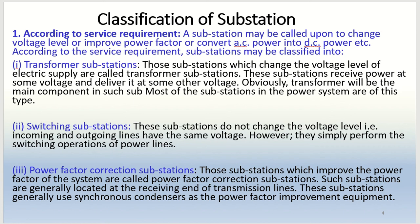Next is the power factor correction substation. Those substations which improve the power factor of the system are called power factor correction substations. Such substations are generally located at the receiving end of transmission lines and use synchronous condensers as the power factor improvement equipment.